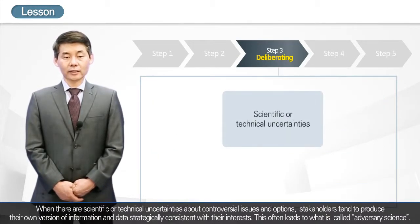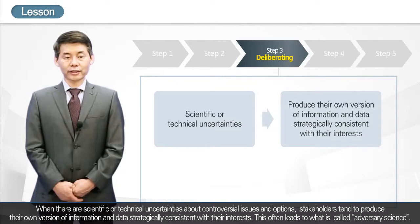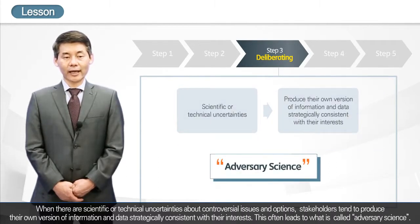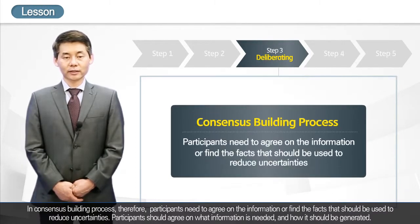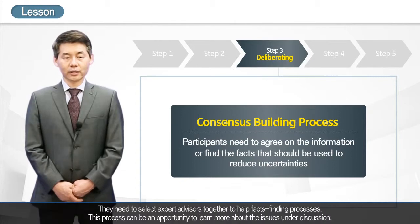When there are scientific or technical uncertainties about controversial issues and options, stakeholders tend to produce their own version of information and data strategically consistent with their interests. This often leads to what is called adversary science. In a consensus-building process, therefore, participants need to agree on the information or facts that should be used to reduce uncertainties. They should agree on what information is needed, how it should be generated, and select expert advisors together to help with fact-finding processes, which can be an opportunity to learn more about the issues under discussion.